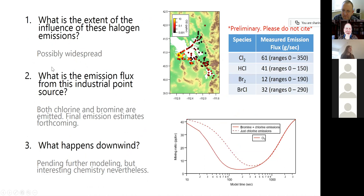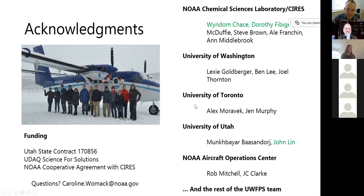So I'm almost out of time. To wrap up: this is still very much a work in progress, but what we think we're finding is that these halogen emissions are possibly quite widespread. We have some tentative numbers for emission fluxes, but again this is preliminary. We'll get final answers soon, and the modeling is still pending, but obviously some very interesting chemistry is happening. Thank you to the people involved, particularly those in green, and thank you to our funders. I'd be happy to take any questions.